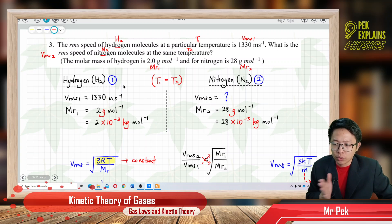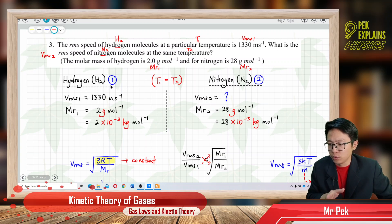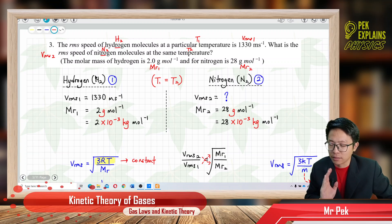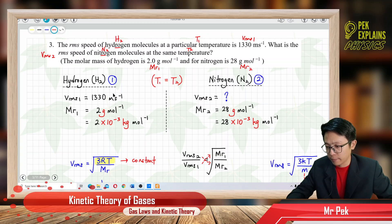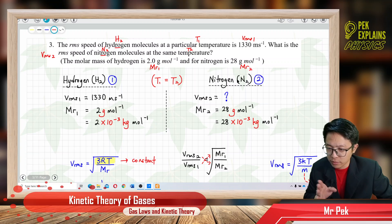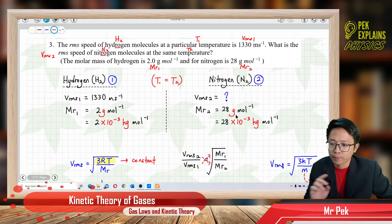Whenever I have two different subjects, I like to put them in two different columns so the work looks systematic and we can easily retrieve the data. Hydrogen is labeled as one, and nitrogen is labeled as two.